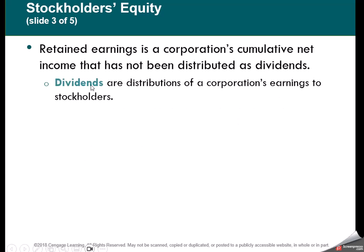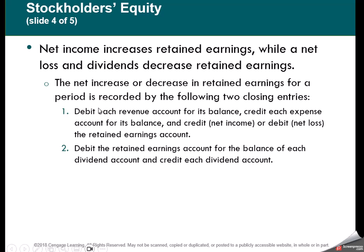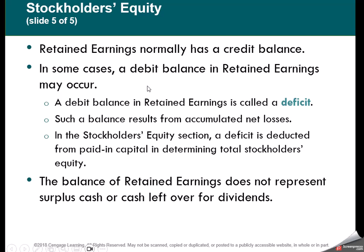Dividends are paid out of retained earnings and come out of our stockholders' equity account. Net income increases retained earnings; dividends decrease retained earnings. Retained earnings' normal balance is a credit balance. If it ever goes into debit, it would be because the company has a net loss — and after years of losses, that creates a deficit in retained earnings.